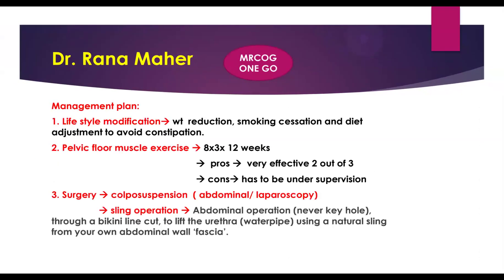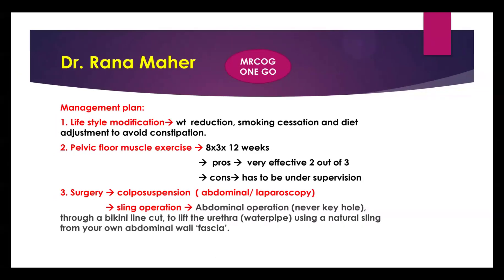For lifestyle modification, identify the patient's specific risk factors. If she has a high BMI — which is usually the situation in the exam — advise weight reduction. If she is a smoker, offer a smoking cessation program. Advise diet adjustment to avoid constipation. For pelvic floor muscle exercises, the regimen is eight squeezes, three times daily for 12 weeks for stress urinary incontinence — note it's 16 weeks for prolapse, so don't mix them up.